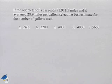If the odometer of a car reads 71,911.5 miles and it averaged 28.9 miles per gallon, select the best estimate for the number of gallons used. And we have choices,